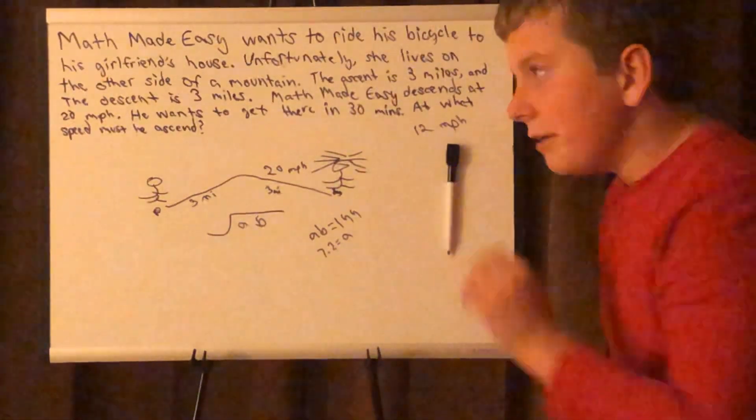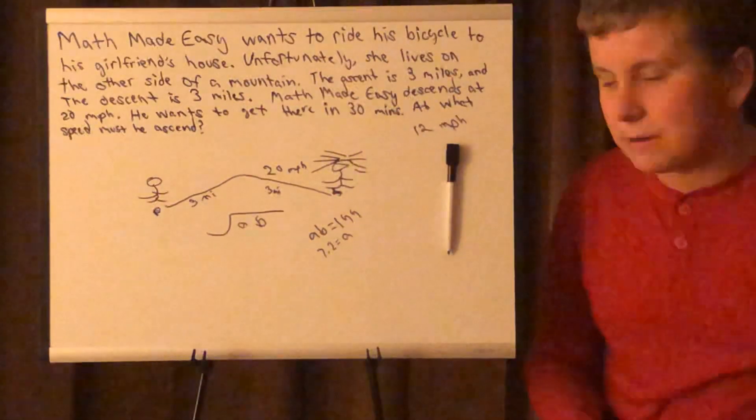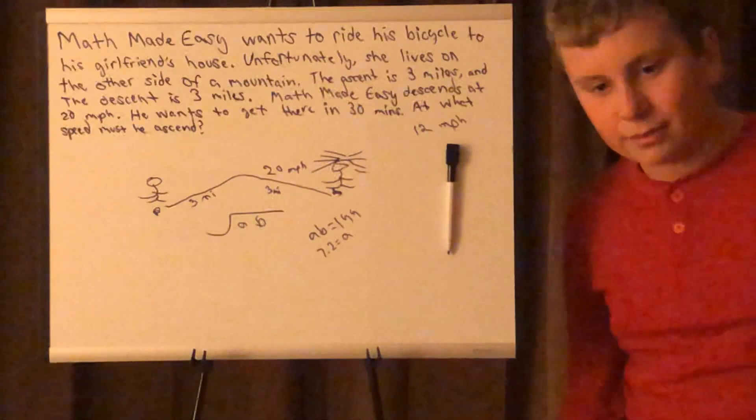So for me to get to my girlfriend's house on time, I'll have to ascend at 7.2 miles per hour and then descend at 20 as given.